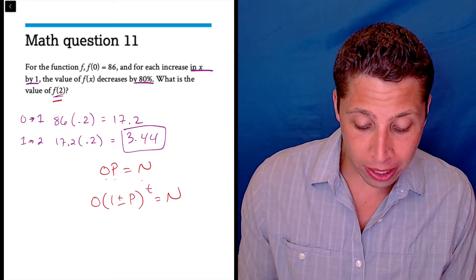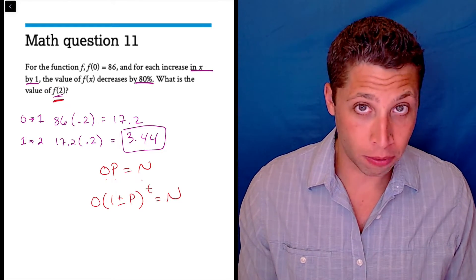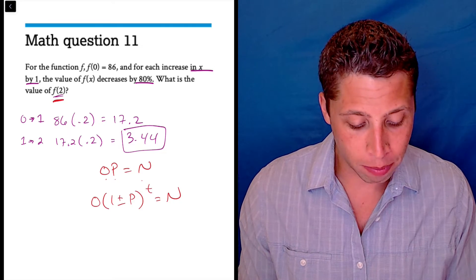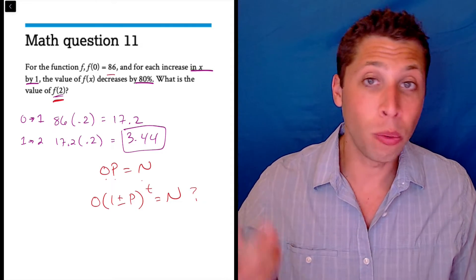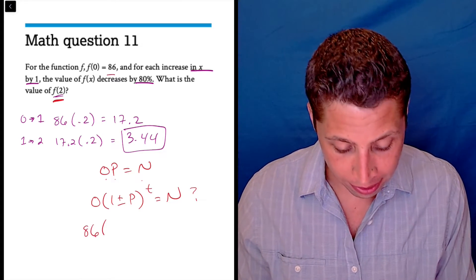So the new value is kind of like the f, right? That's kind of what we're looking for, that's kind of my mystery. The O is 86, right? The value we start with is always the 0 value, so that's the 86.